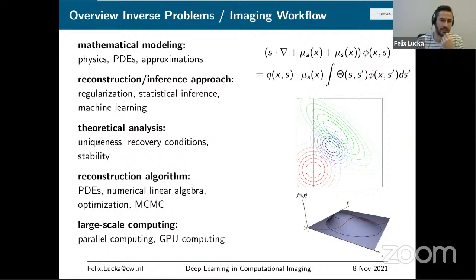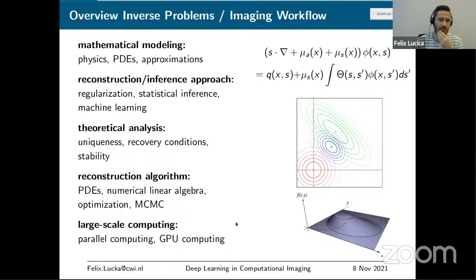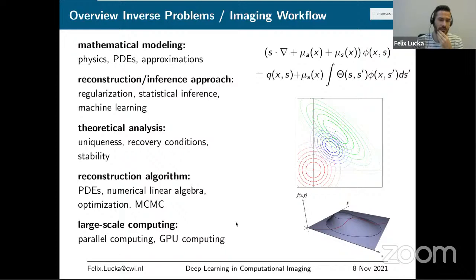You can also look at theoretical analysis — asking when the solution is unique, under what conditions certain unknowns can be recovered, and whether this is stable with respect to noise. Then there's the computational and algorithmic part: numerically solving PDEs, linear algebra, optimization routines. In the statistical or Bayesian setting you may need to quantify uncertainty by sampling from high-dimensional distributions using Markov chain Monte Carlo methods, which typically involves large-scale parallel and GPU computing.